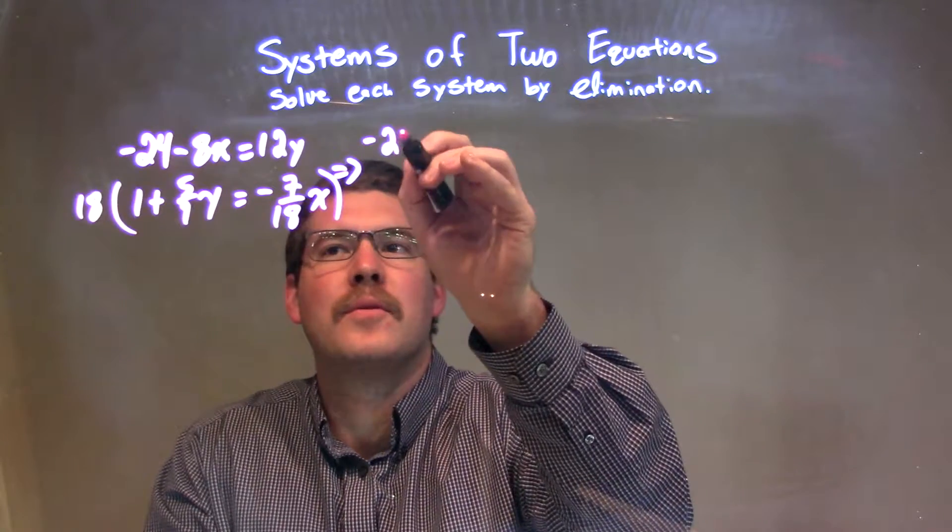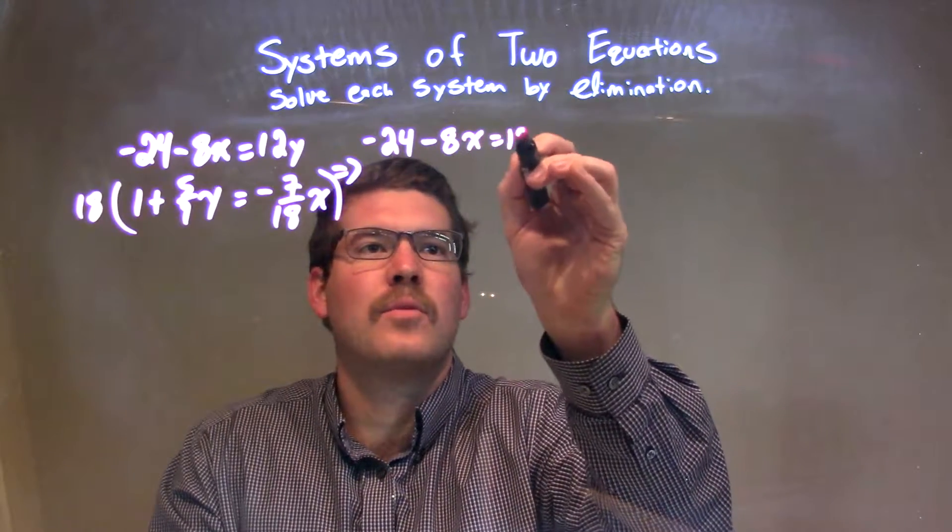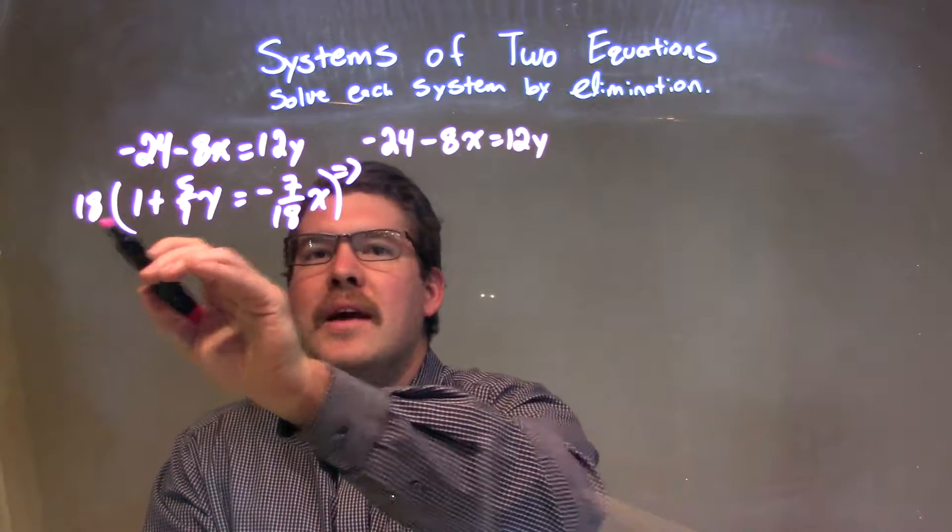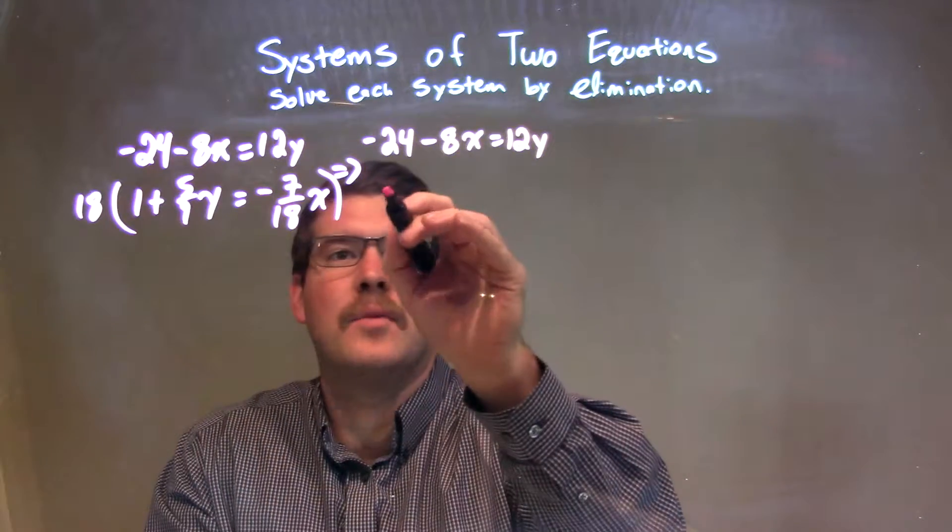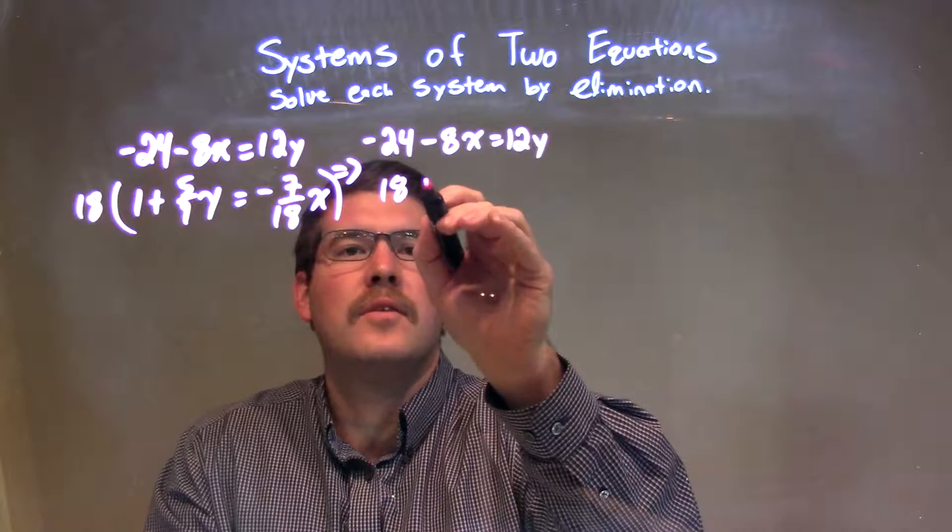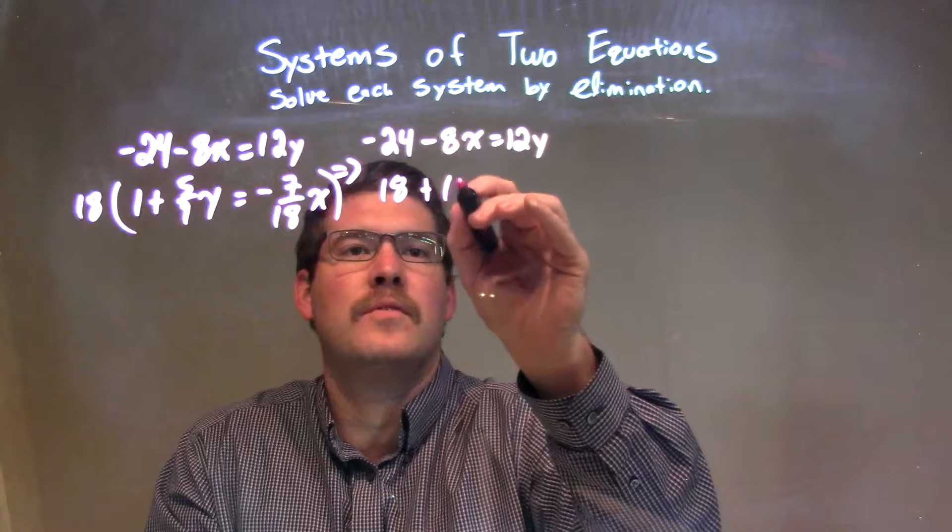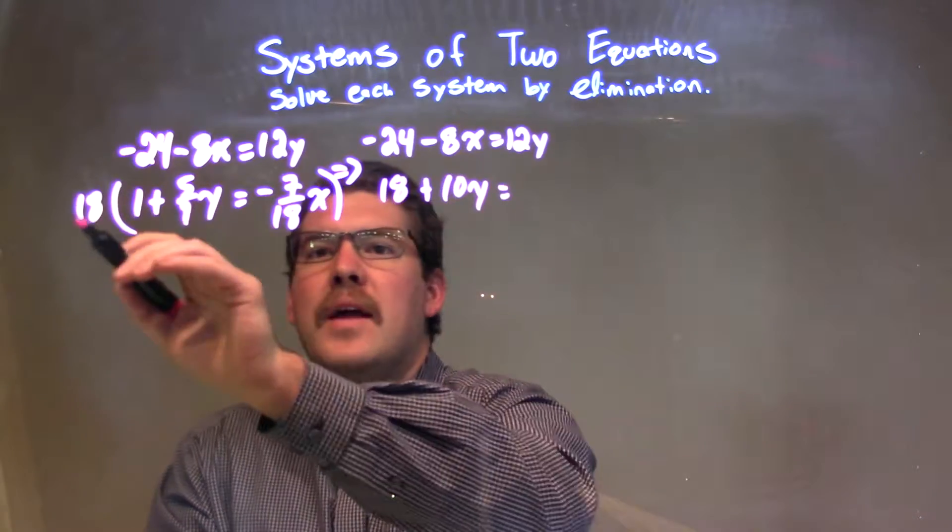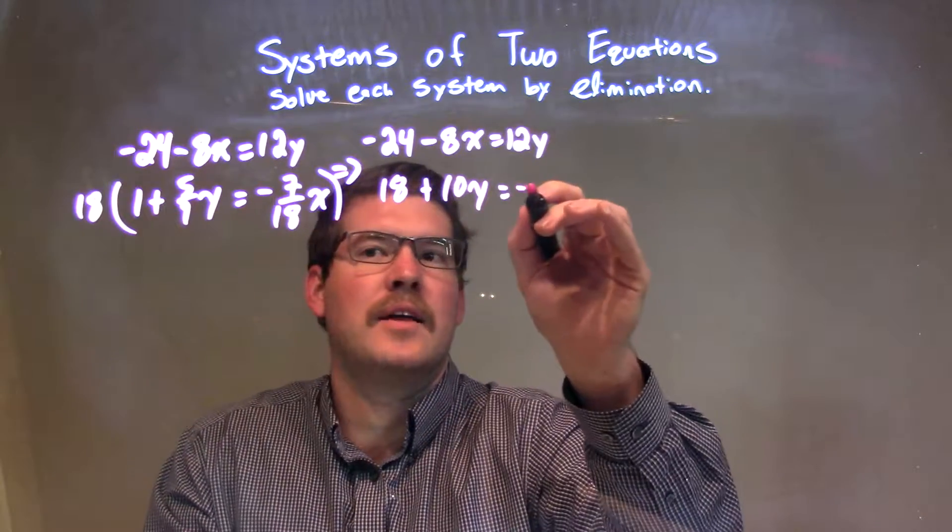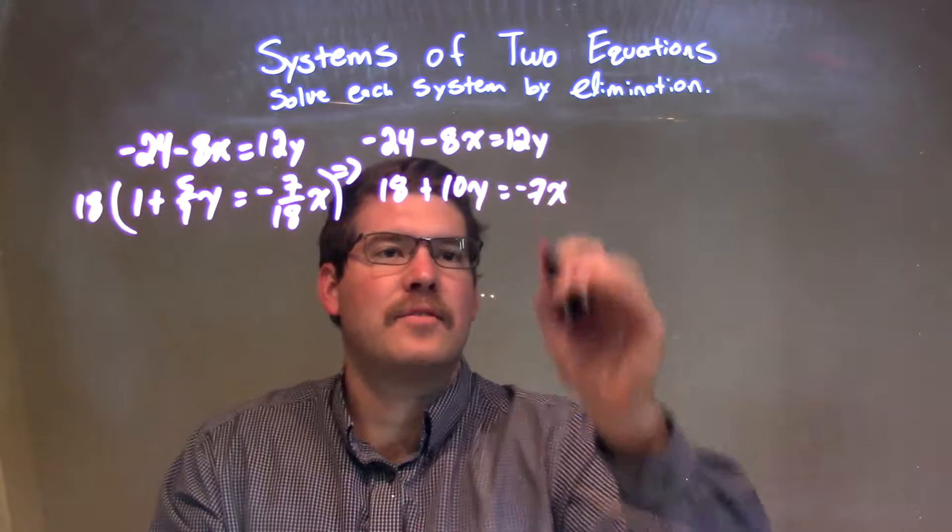So, we have negative 24 minus 8x equals 12y, and then we have 18 multiplied across. 18 times 1 is 18, plus, well, 18 divided by 9 gives me a 2. 2 times 5 is 10, so we have 10y here, and then 18 eliminates, we just have a negative 7x right there.